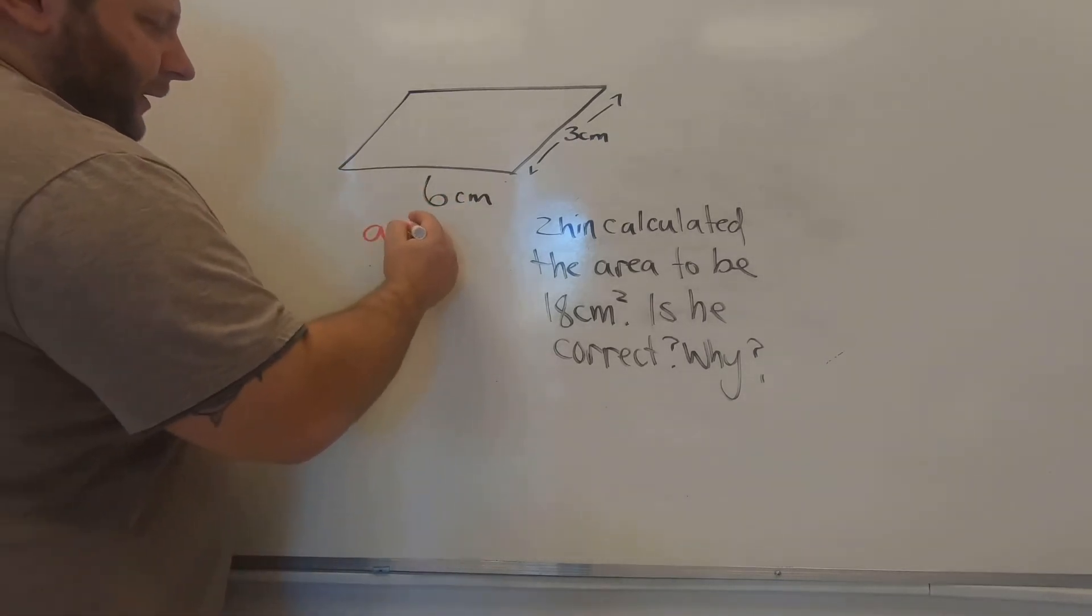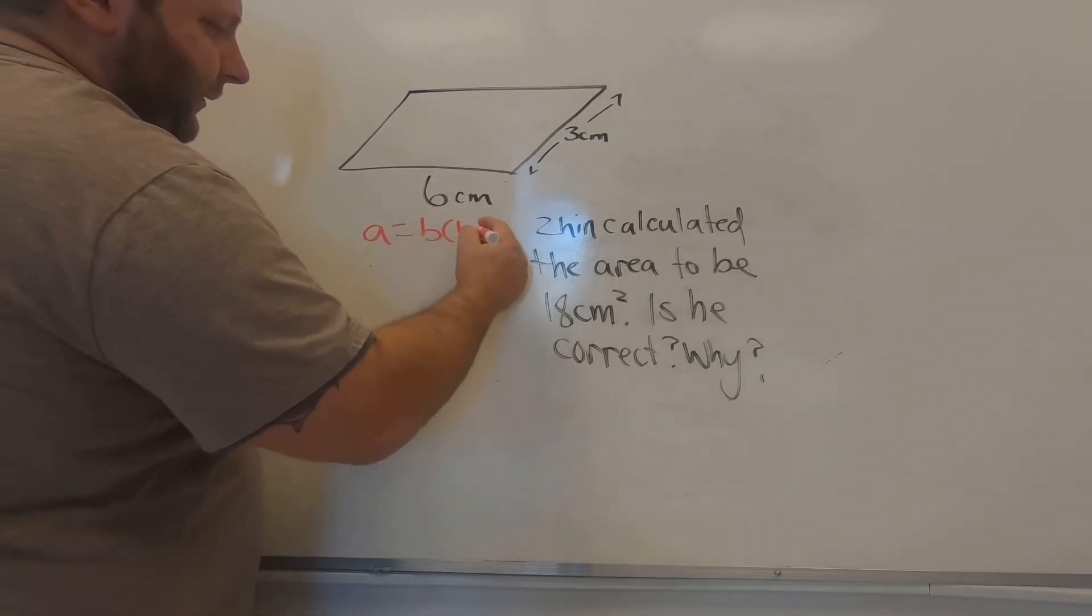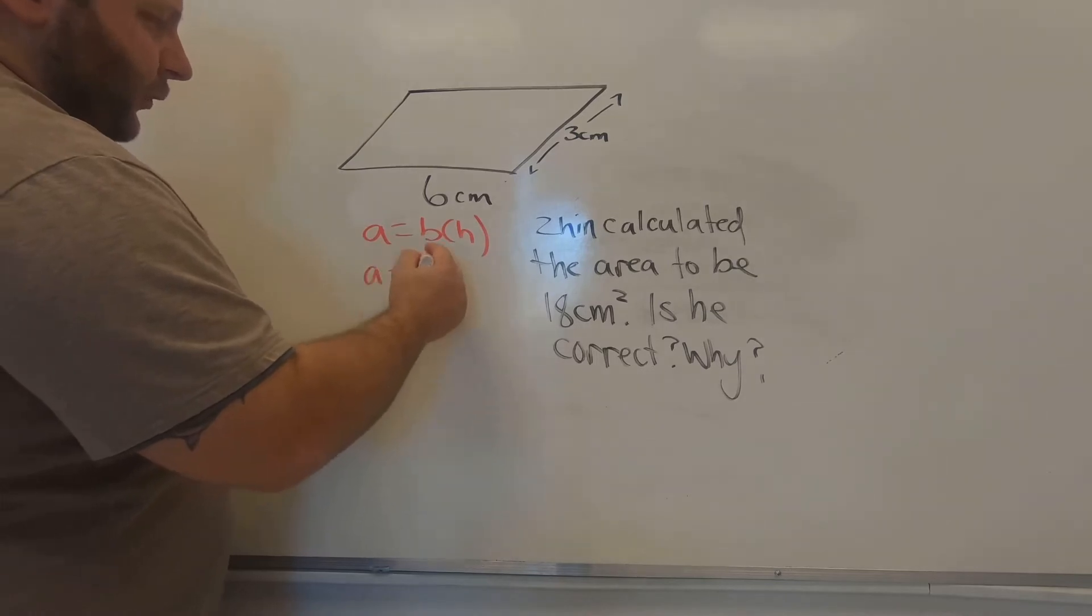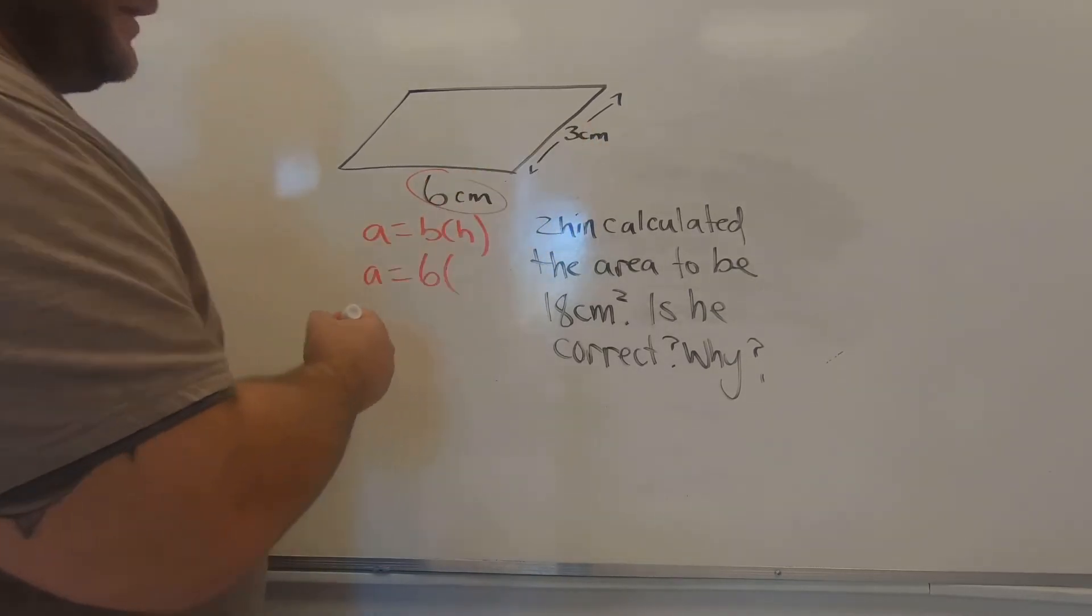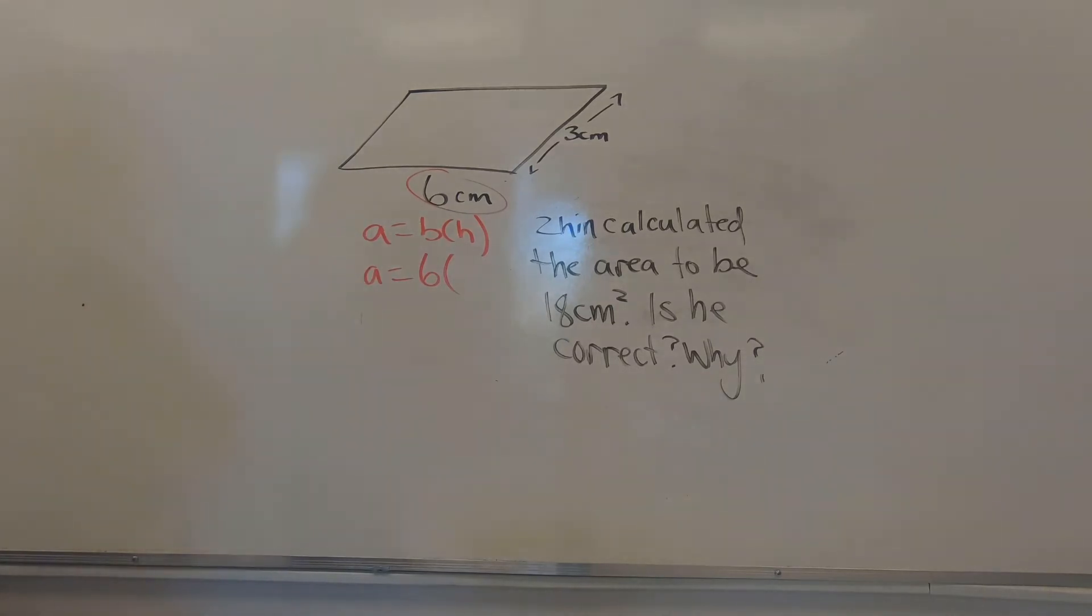If we use our formula, area equals base times height, we definitely know that 6 is the base, but the question is, is 3 the height? And the answer to this is, no, 3 is not the height. It's the side length. And the side length is not the height.